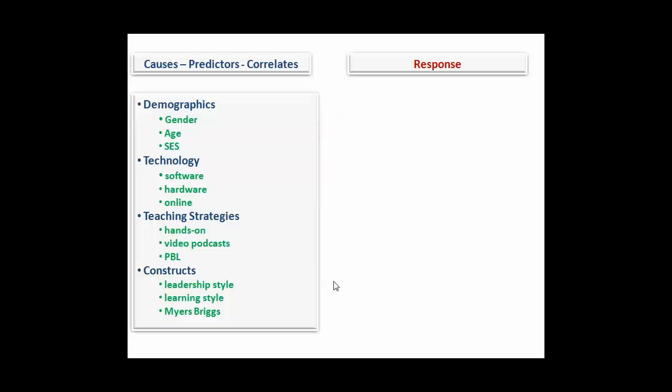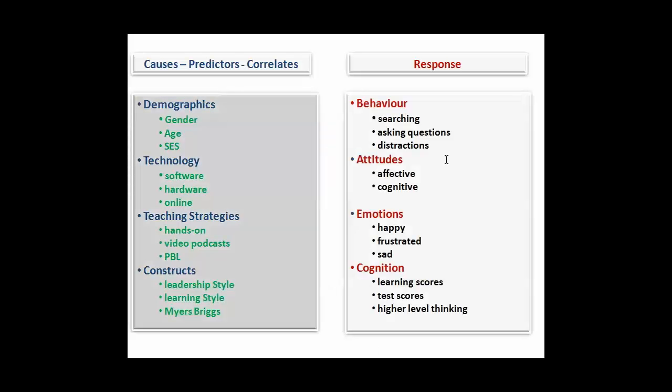So, what do we mean by response? Well, there are four categories of response that I'm aware of. Behaviors, attitudes, emotions, and cognition. Those are the four general categories of human response.